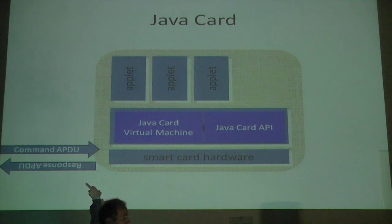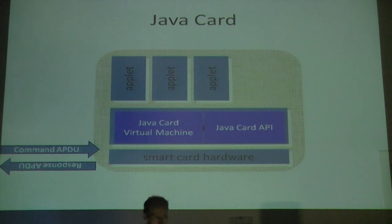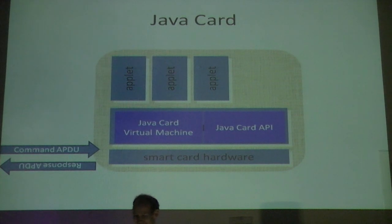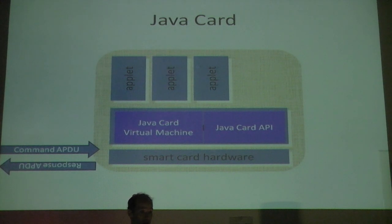On the left you see the input/output channel. You send in an APDU — Application Protocol Data Unit — and there are command and response versions of those. Basically, just strings of bytes that you send in and retrieve out. You send in a command, the smart card does some processing, and it gives you an answer.